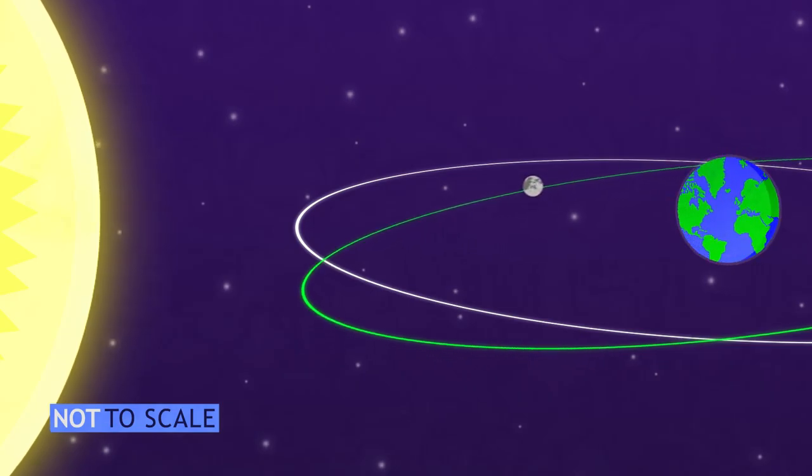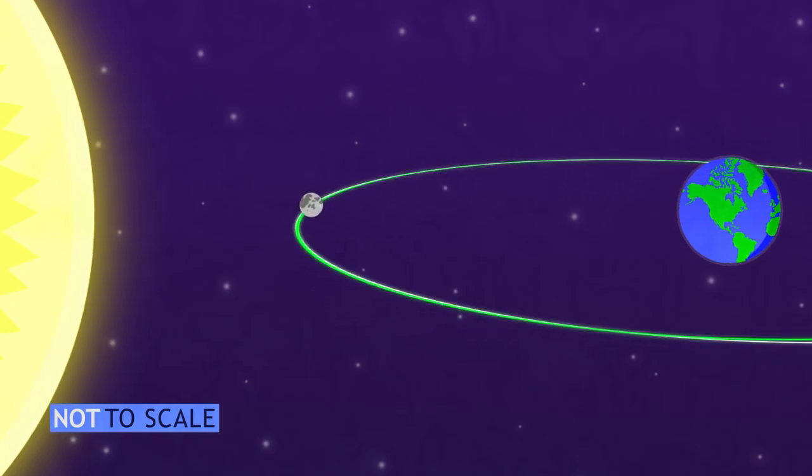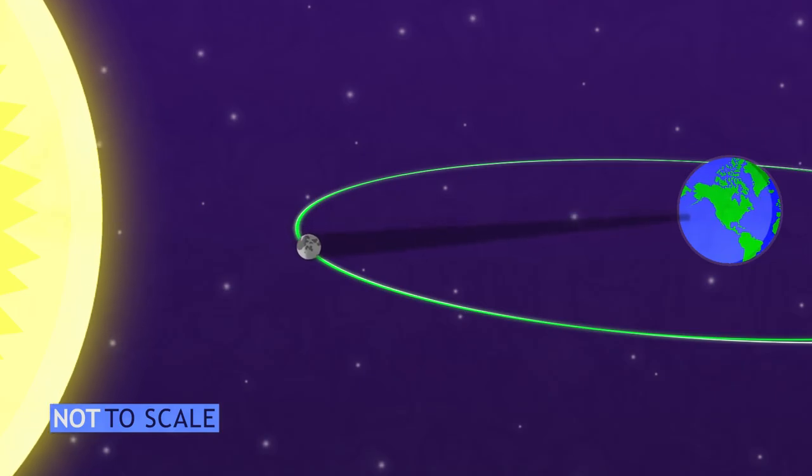A couple times per year, its orbit will put it at just the right angle to line up with the sun and create an eclipse. By carefully measuring the orbits of the moon and Earth, we can predict when the alignment will be just right for an eclipse to happen.